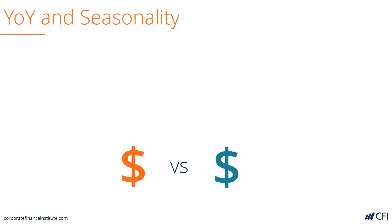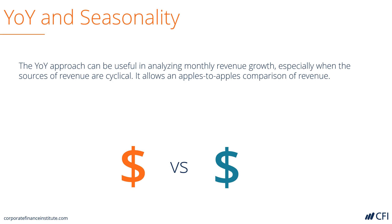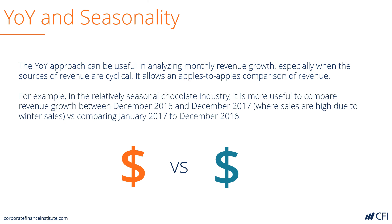Let's talk about year-over-year and seasonality. It's especially useful for analyzing companies that have a large amount of seasonality or cyclicality. As an example, if the chocolate industry is very seasonal with high sales in December, it is much more useful to compare the sales in December 2017 to the sales in December 2016, versus comparing the sales in January to the sales in December. This is a classic example of where we would use year-over-year analysis.